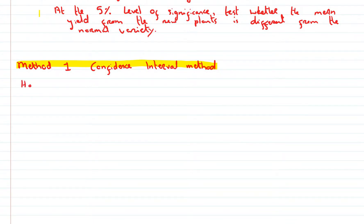First of all, in both methods we'll state our null hypothesis. We'll say the mean of new variety is 1.83 kg.